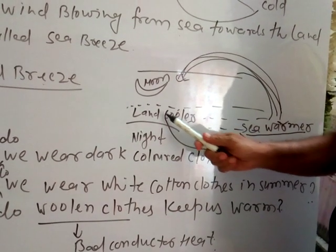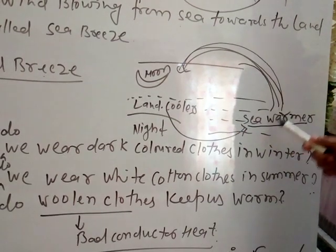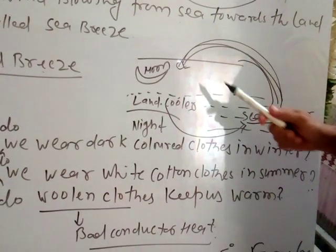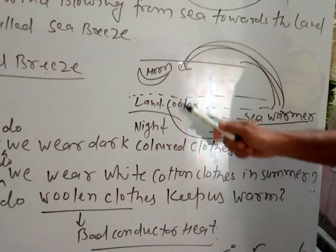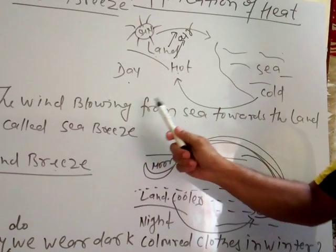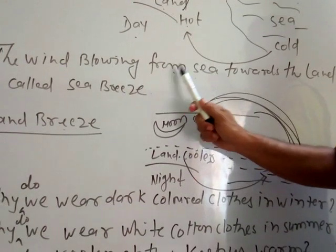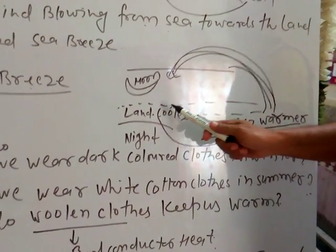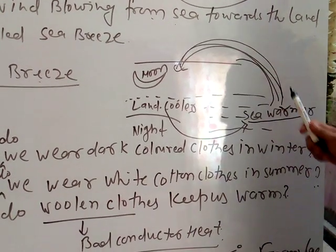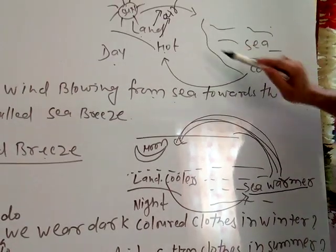By evening, the land becomes cooler and the cold air from the land moves towards the sea. So land breeze takes place during night, where cooler air moves from the land towards the sea. In contrast, during sea breeze the air moves from the sea towards the land during daytime. This circulation — sea breeze by day and land breeze by night — are the two phenomena explained.